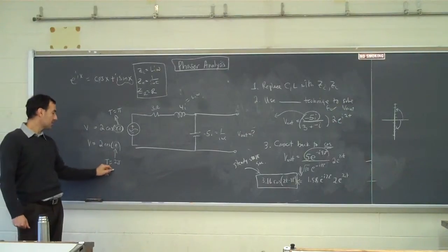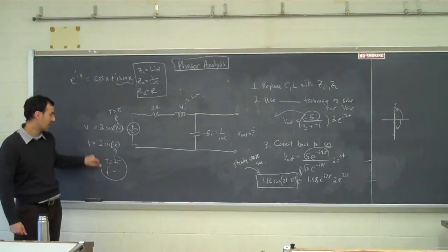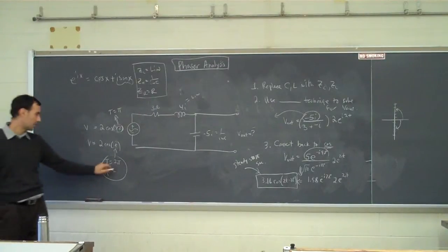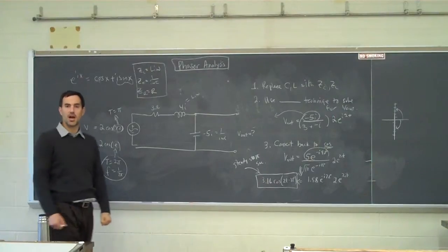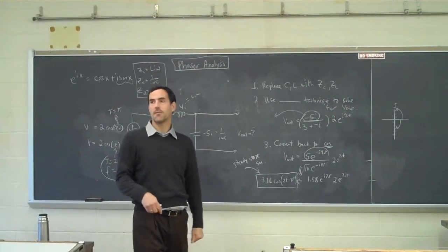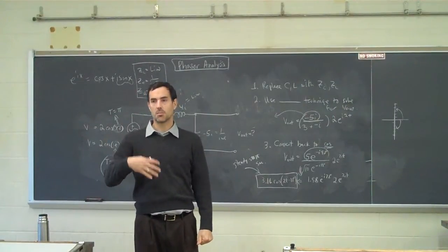How about the frequency of this bottom case down here? 1 over 2 pi. Frequency is 1 over the period. Period is how much time to repeat once. Frequency is how many repeats per second.